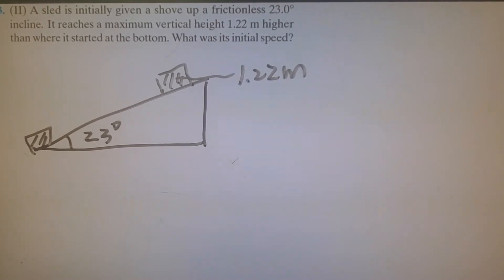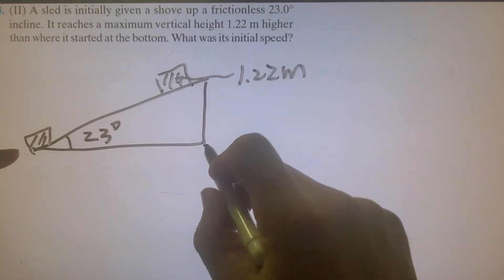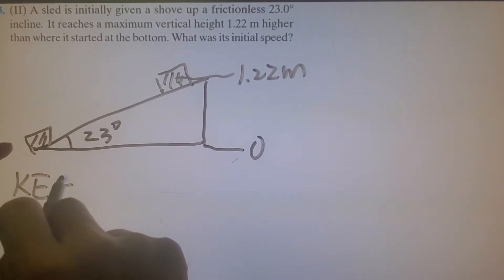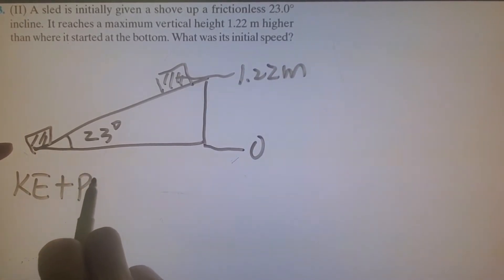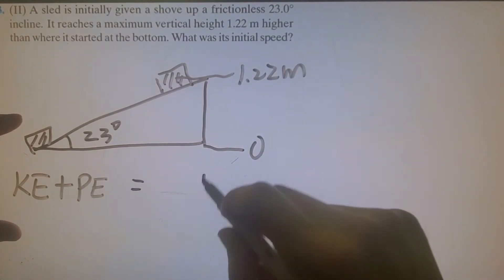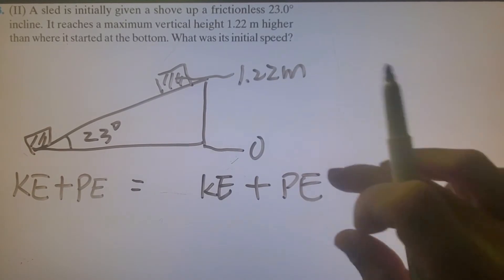We think of conservation of energy. Initially, when the height here is 0, and at the top it's 1.22. Kinetic energy plus potential energy at the beginning should equal kinetic energy plus potential energy at the end.